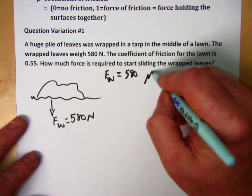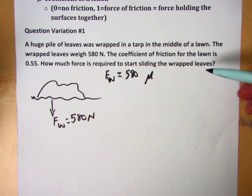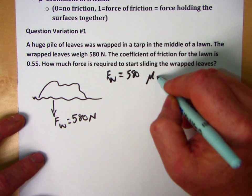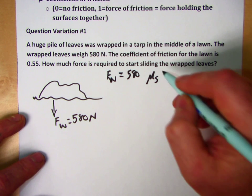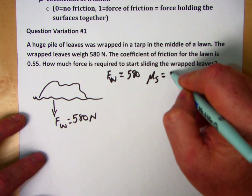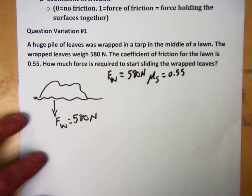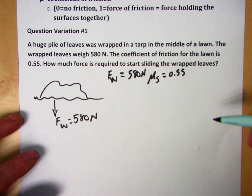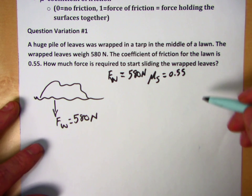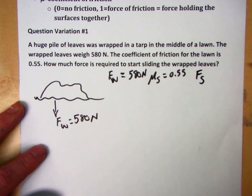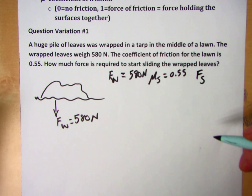I've got my coefficient of friction. Now, we've got a pile of leaves at rest, so it's not moving—we've got to get them started. So we're looking for the coefficient of static friction, and that equals 0.55. Weight has units of newtons. Coefficient of friction has no units. And we need to find our force of static friction—this is the force we need to overcome to get those leaves moving.